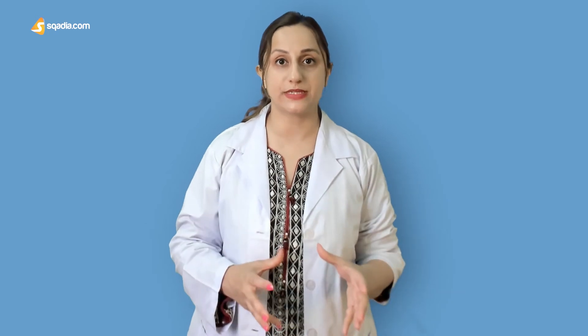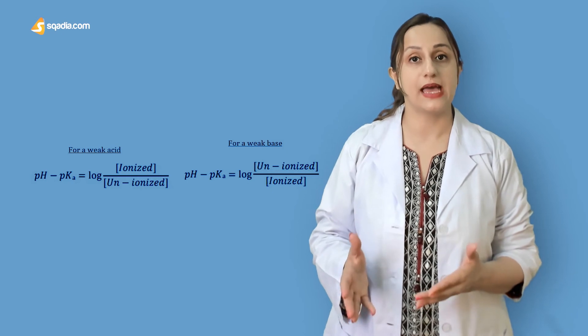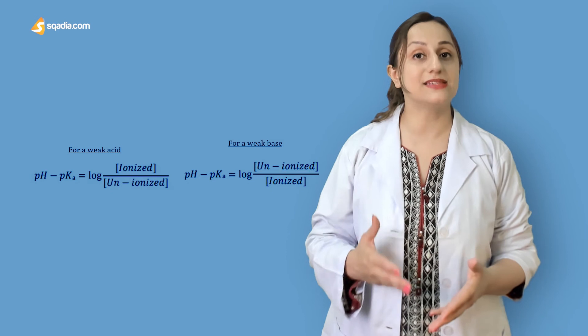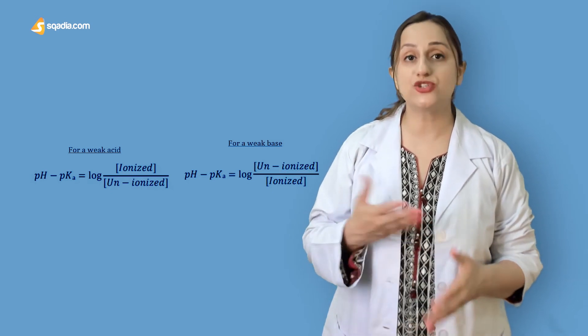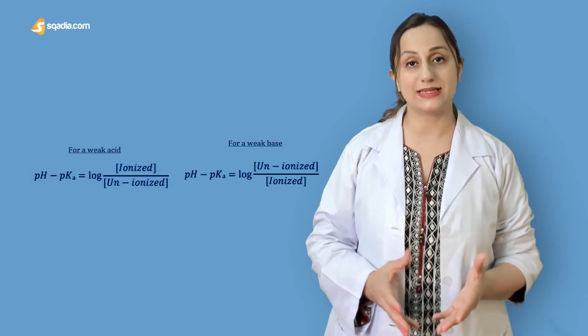Therefore, the effective concentration of the permeable form of each drug at its absorption site is determined by the relative concentrations of the charged and the uncharged forms. The ratio between the two forms is in turn determined by the pH at the site of absorption and by the strength of the weak acid or base, which is represented by the ionization constant known as the pKa.